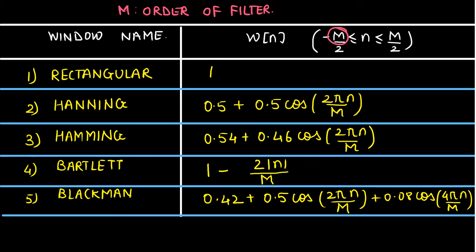The second window we had seen was the Hanning window, whose equation is given as w(n) = 0.5 + 0.5 cos(2πn/M). The third one was the Hamming window, whose equation is given as 0.54 + 0.46 cos(2πn/M). The fourth one is the Bartlett window, whose equation is 1 − 2|n|/M. The fifth one is the Blackman window, whose equation is 0.42 + 0.5 cos(2πn/M) + 0.08 cos(4πn/M).